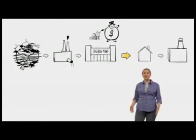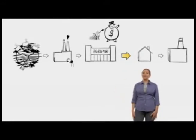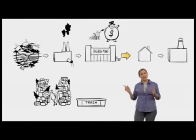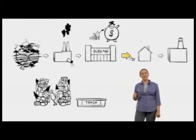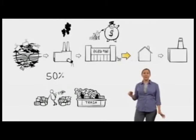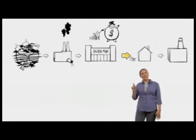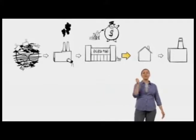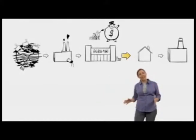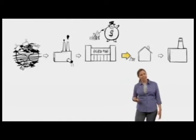And do we? We shop and shop and shop keep the materials flowing, and flow they do. Guess what percentage of total materials flow through this system is still in product or use six months after their date of sale in North America? 50%? 20? No. 1%. In other words, 99% of the stuff we harvest, mine, process, transport, 99% of the stuff we run through this system is trashed within six months. Now, how can we run a planet with that level of materials throughput?